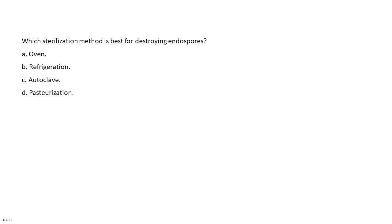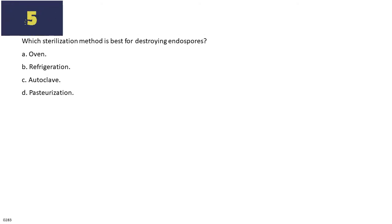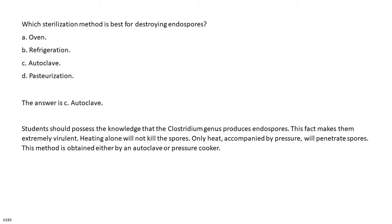Which sterilization method is best for destroying endospores? A. Oven. B. Refrigeration. C. Autoclave. D. Pasteurization. The answer is C. Autoclave. The Clostridium genus produces endospores, making them extremely virulent. Heating alone will not kill the spores. Only heat accompanied by pressure will penetrate spores. This method is obtained either by an autoclave or pressure cooker.